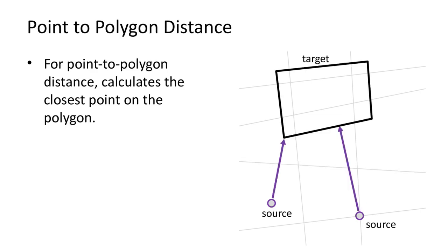For point-to-polygon distances, the closest point on the polygon is calculated. The closest point is again calculated by projecting the source point onto the polygon edges. The distance between the source and the closest point is then calculated.